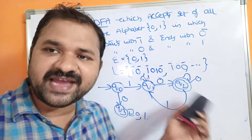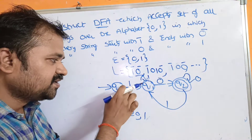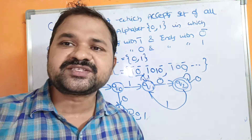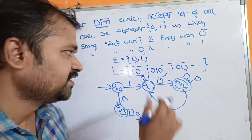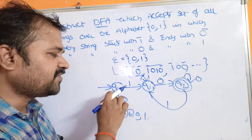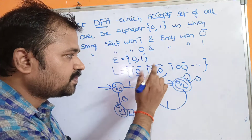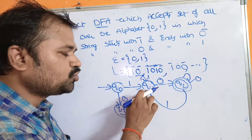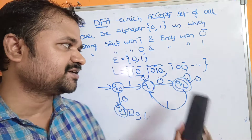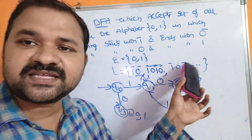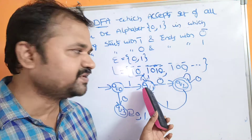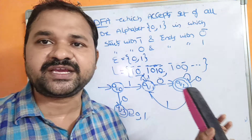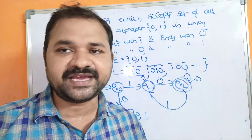Let us verify whether the diagram is correct. On Q0, applying 1 moves to Q1. On Q1, applying 0 moves to Q2, which is the final (accepting) state. For the string '1010': apply 1 on Q0 → Q1; apply 0 on Q1 → Q2; apply 1 on Q2 → Q1; apply 0 on Q1 → Q2. We end at Q2, so the string is accepted. All valid strings are accepted by the DFA.